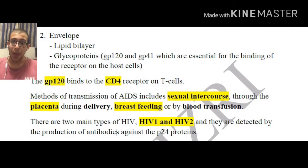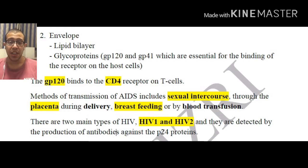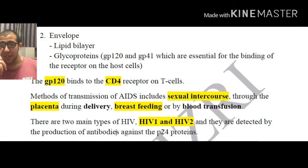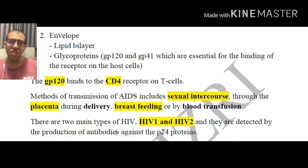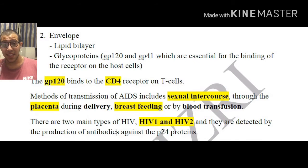Next we have the envelope, which comprises a lipid bilayer and glycoproteins including GP120 and GP41, which are essential for binding to receptors on the host cell. GP120 is of particular interest — it binds to the CD4 receptor on T cells, and this is where the infection starts and how the virus begins its activity within host cells.